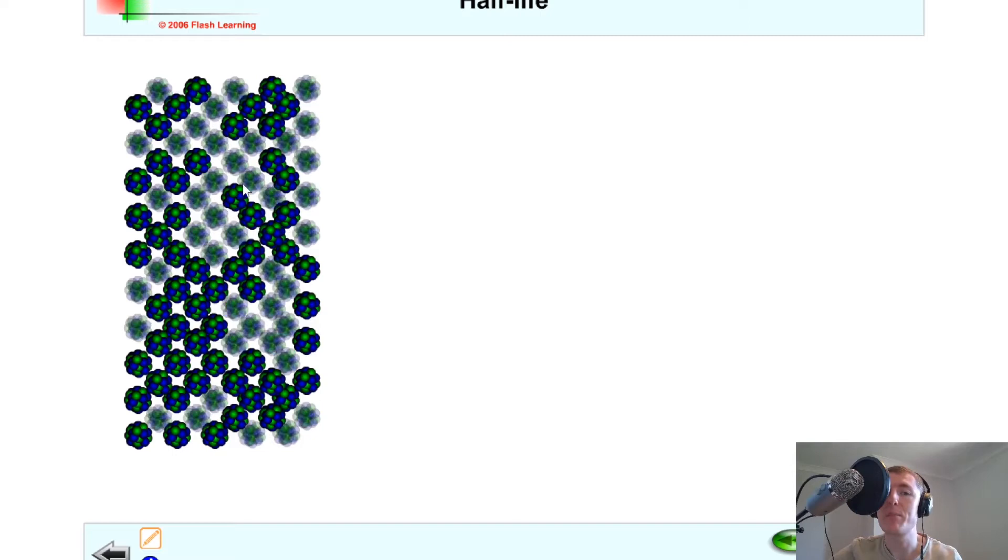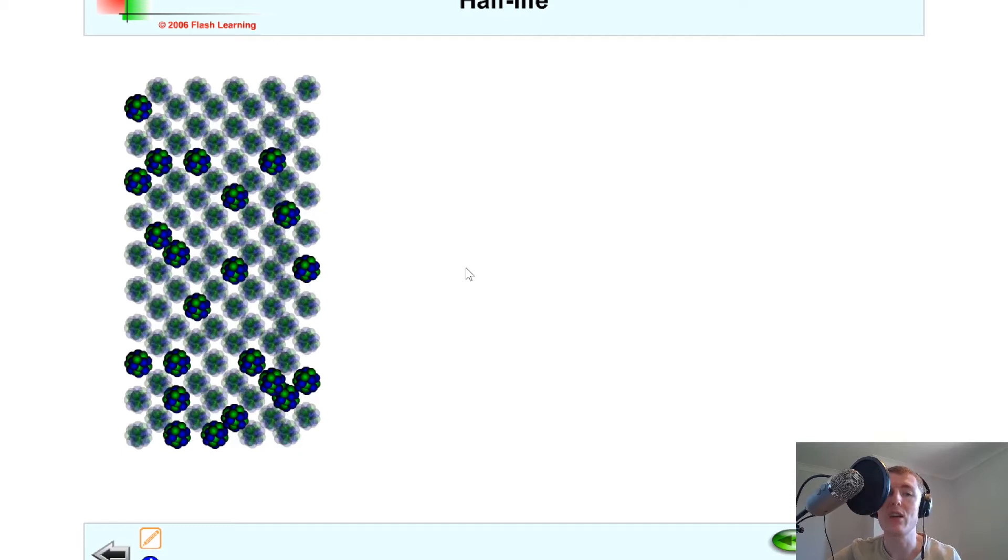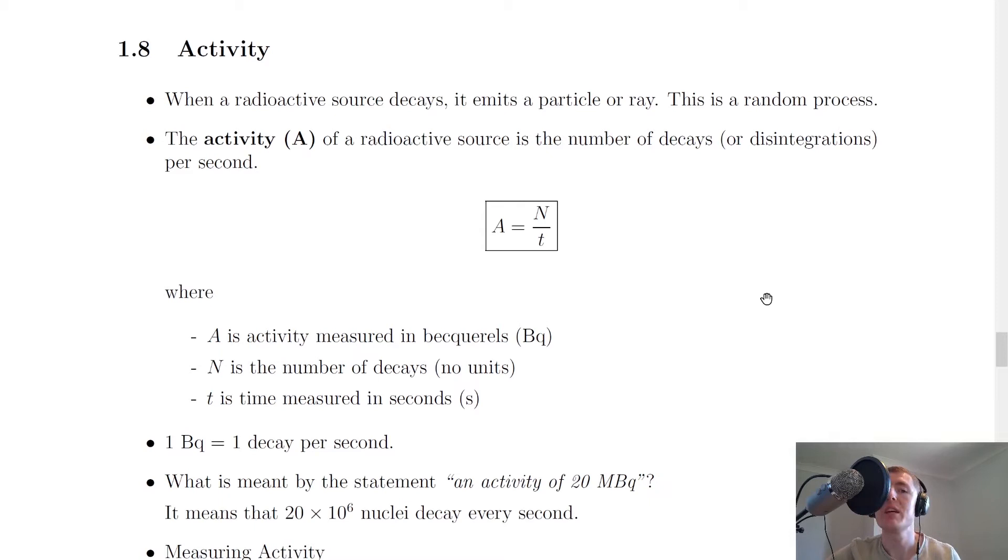If we play the animation, you'll notice that when they disappear, that nucleus has decayed. It's a random process—there's no telling which one's going to decay next. It started off quite fast and now it's slowed down a bit. The rate at which these nuclei are decaying at any given time can be given a name.